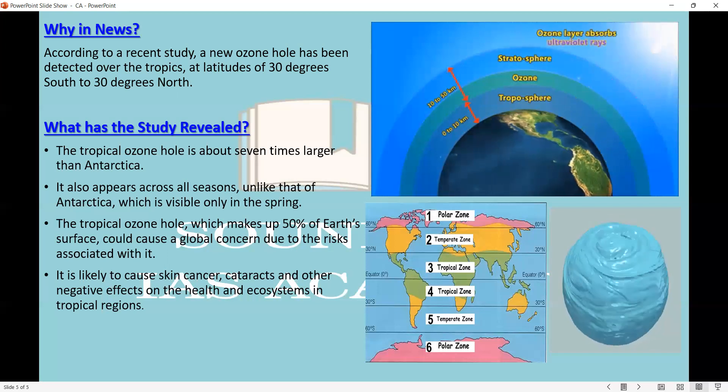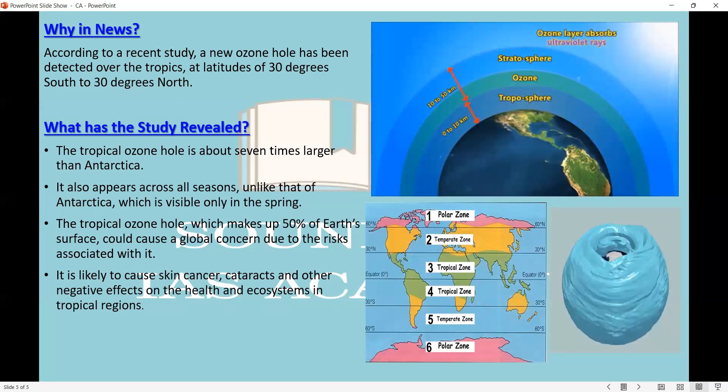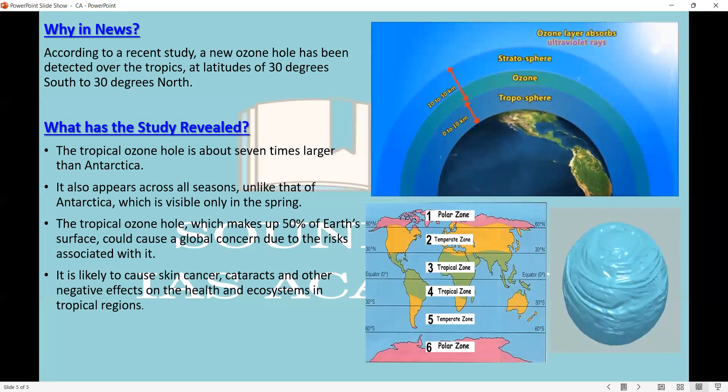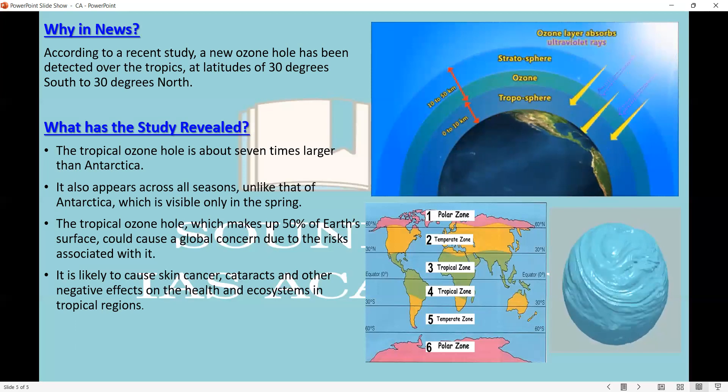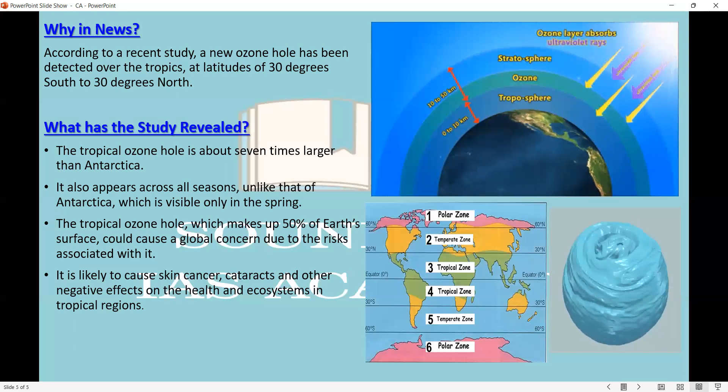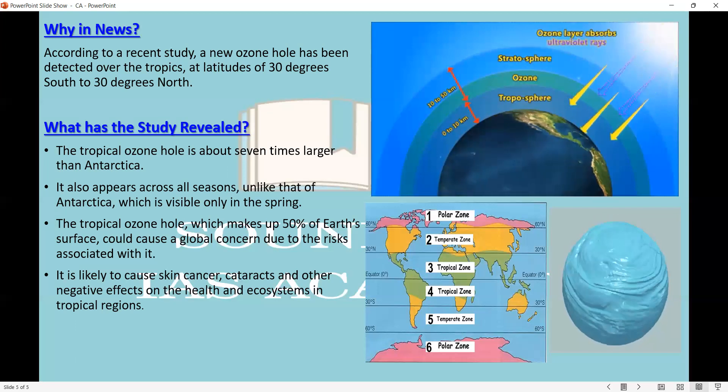The tropical ozone hole is also a global concern and risk-related factors. What is the ozone hole? This is harmful to living organisms. This is the genetic material of DNA effect. So, skin cancer, cataracts, health-related problems and ecosystem-related problems arise.